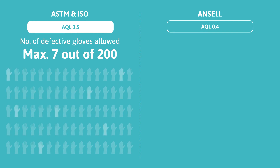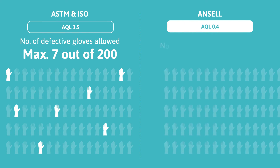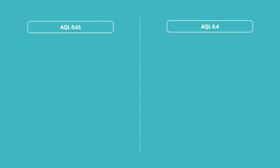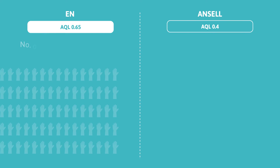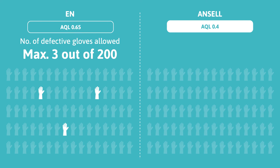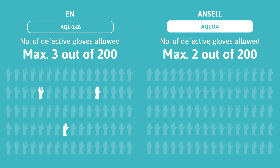When gloves are released to an AQL of 0.4, they are subjected to a lower tolerance for defects, and only two defective gloves out of the 200 gloves are considered acceptable. On the other hand, when gloves are released to an AQL of 0.65, three out of 200 defective gloves are deemed acceptable, whereas an AQL of 0.4 would mean a maximum of only two defective gloves are considered acceptable.